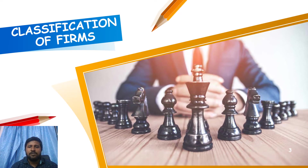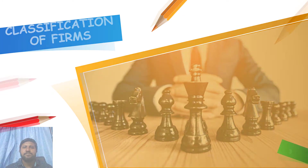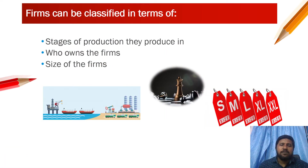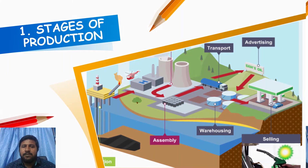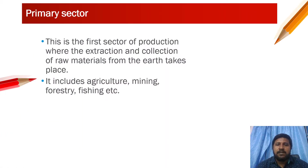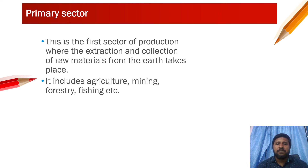Firms can be classified in three ways: by stages of production, by who owns the firms, and by the size of firms. Starting with stages of production — the primary sector is where extraction and collection of raw materials from the earth takes place. Examples include agriculture, mining, fishing, and forestry.